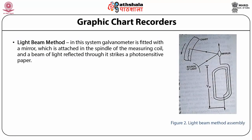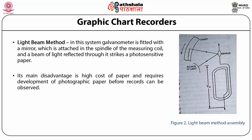In the light beam method, a galvanometer is fitted with a mirror attached to the spindle of the measuring coil, and a beam of light reflected through it strikes a photosensitive paper. This method works well at higher frequencies and allows relatively higher chart speeds without compromising resolution. Its main disadvantage is the high cost of paper and the requirement to develop photographic paper before records can be observed, making it unsuitable for real-time monitoring.